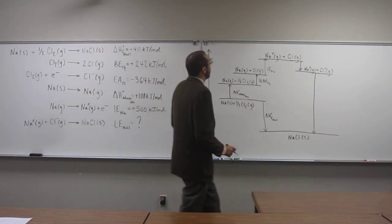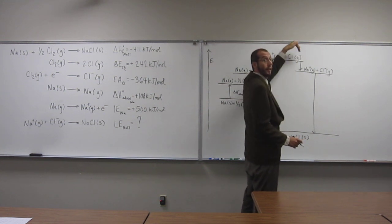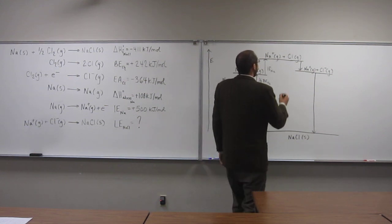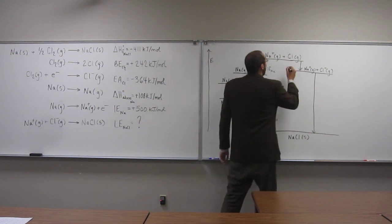So the chlorine getting an electron is going to be exothermic. That's a nice, a good process, right? And we call that, of course, the electron affinity of chlorine.